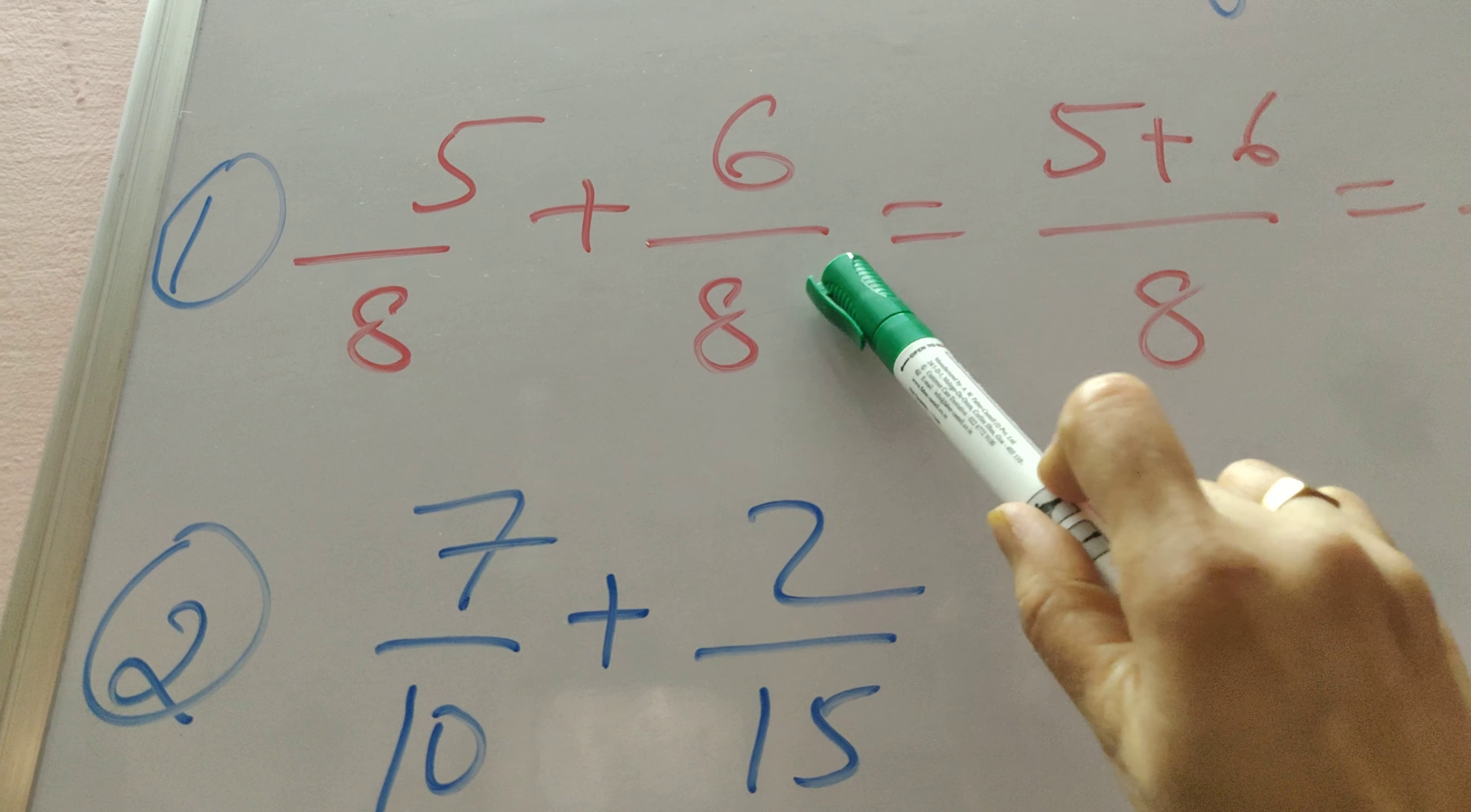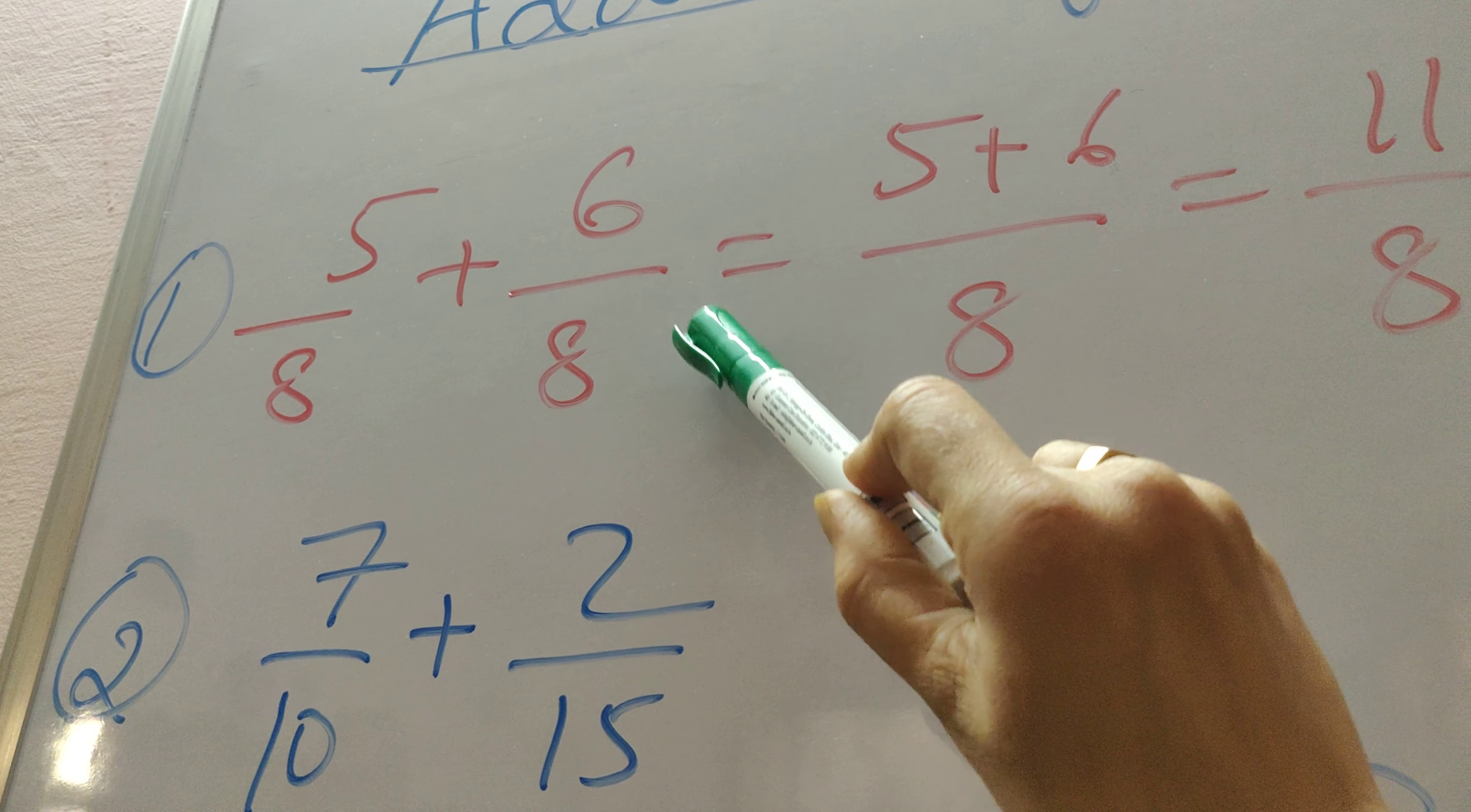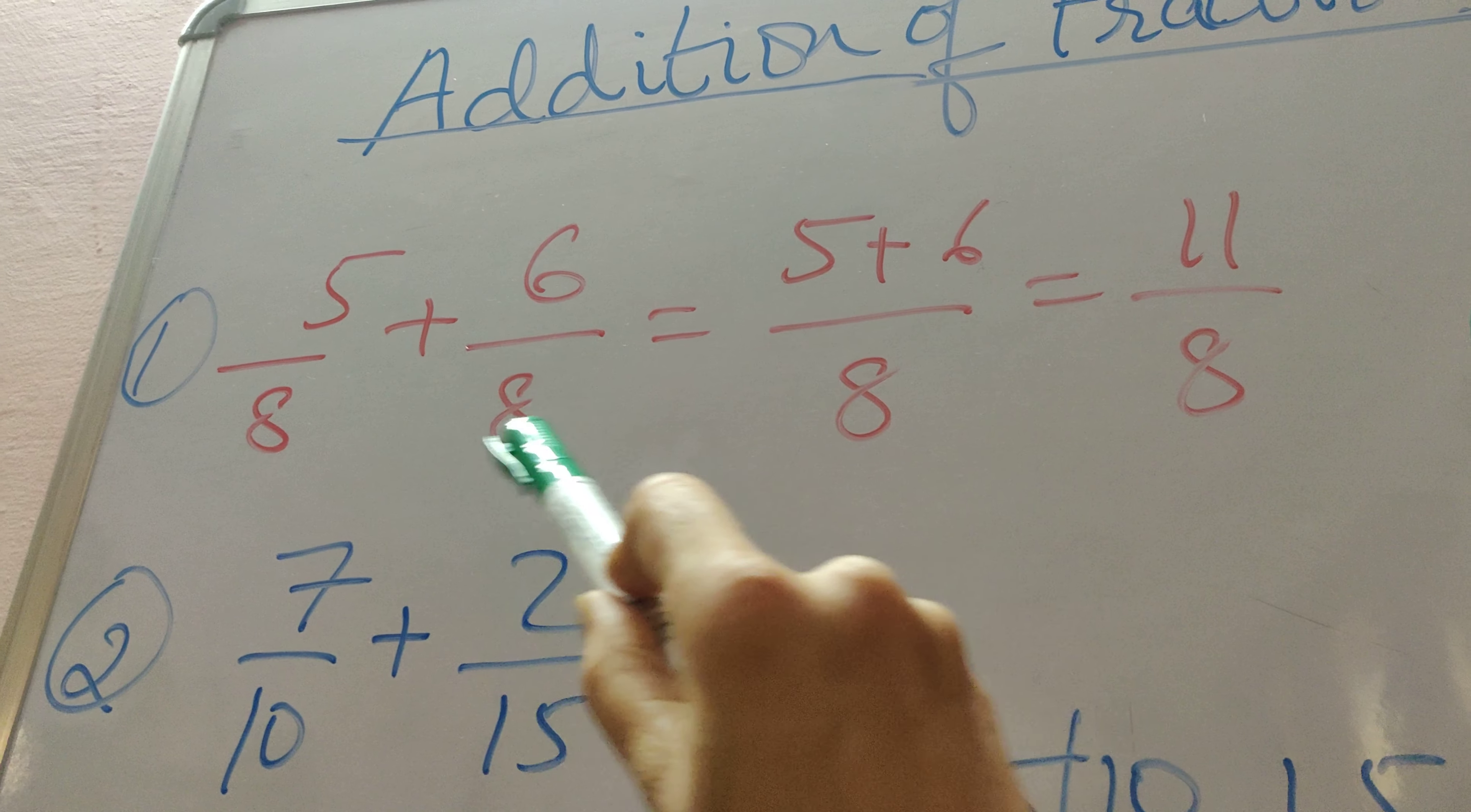Then what do we have to do? We simply bring them together, write them together and add the numerators. The denominator will be the same. So 5 by 8 plus 6 by 8 will become 5 plus 6 by 8, that is equal to 11 by 8. This is a very simple method of addition of fractions with the same denominator.